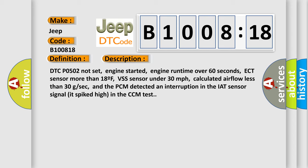ECT sensor more than 18F, VSS sensor under 30 miles per hour, calculated airflow less than 30 GSEC, and the PCM detected an interruption in the IAT sensor signal that spiked high in the CCM test.